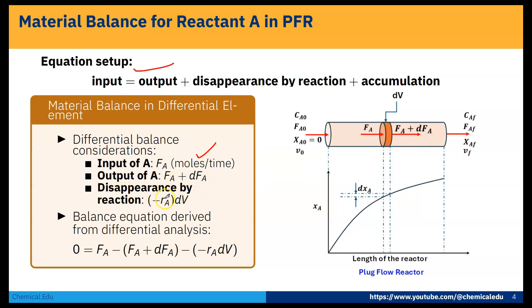As it is steady state, accumulation is actually zero. Now if we put together, the balance equation derived from the differential analysis: zero is equal to input minus output minus disappearance by the reaction. So here zero is equal to FA, that is input, minus output. The output is FA plus dFA, and disappearance by the reaction is minus rA into dV.